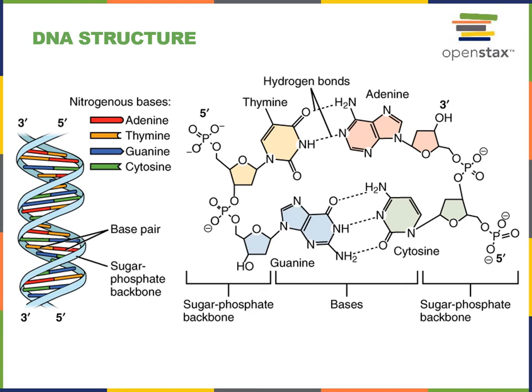Within each nucleic acid polymer, the single strand is formed from nucleotides held together by a sugar phosphate backbone. The sugar phosphate backbone is a phosphodiester bond formed between the phosphate group of one nucleotide and the 5-carbon sugar of an adjacent nucleotide. The free end of a nucleic acid polymer that has a phosphate group unbound is known as the 5' end, and the opposite end where there is a free 5-carbon sugar that is unbound is known as the 3' end.